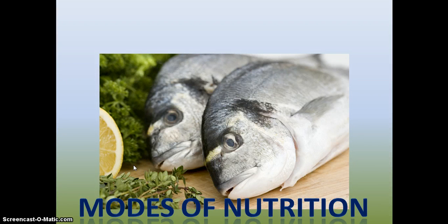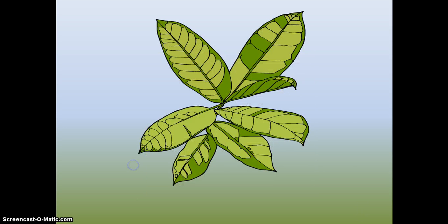Modes of nutrition means the method of procuring or obtaining food by an organism. Different organisms have different methods of obtaining food. All organisms can be classified into two groups.